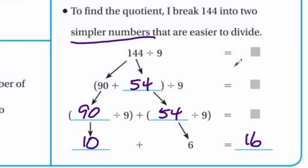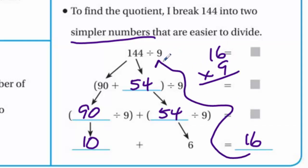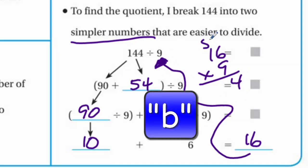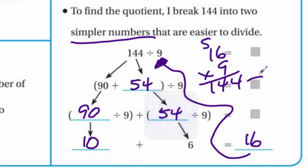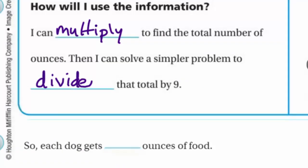You can always check your answer. 16 times 9: six times nine is 54, carry the 5; nine times one is nine, plus five is 14 — so 144. And our statement down here: each dog gets 16 ounces of food.